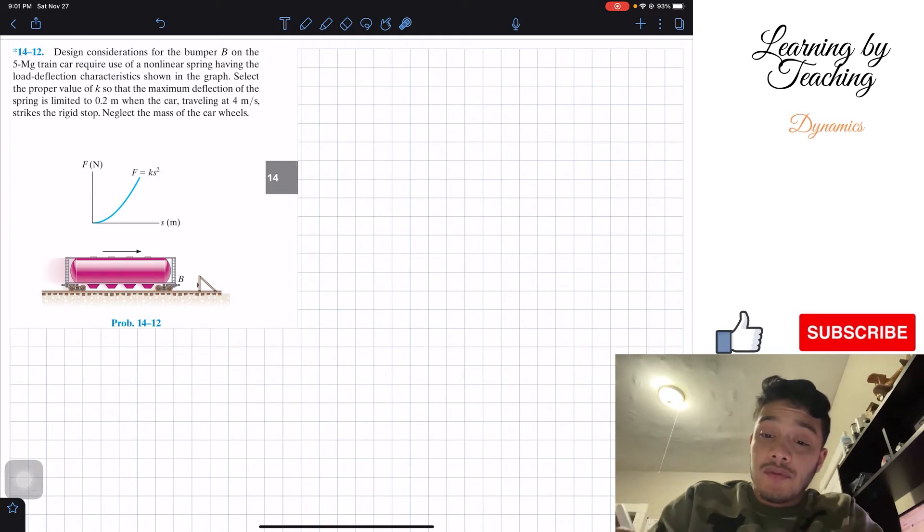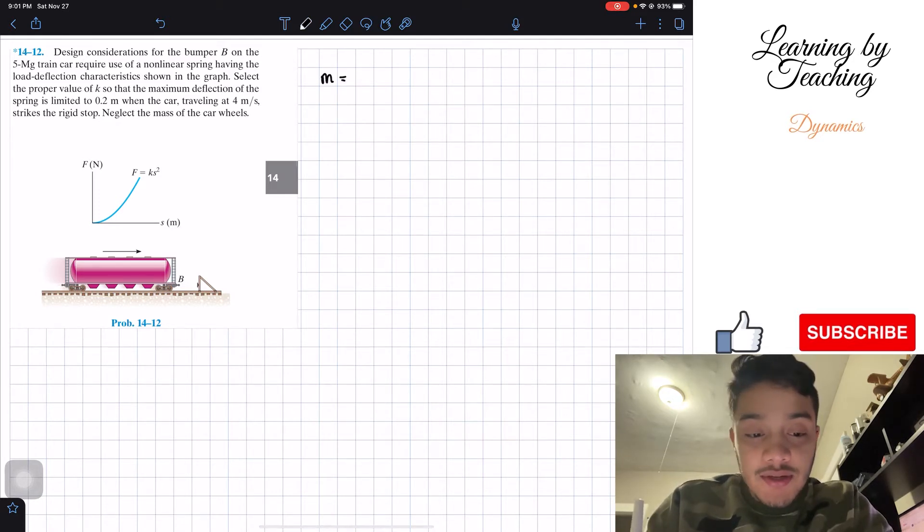Alright, so first of all let's start writing our givens. We're given that the mass of this train is equal to 5 megagrams, and if we convert this to our usual units this will be equal to 5000 kilograms.